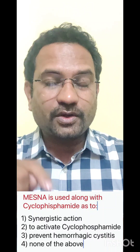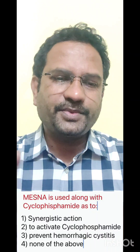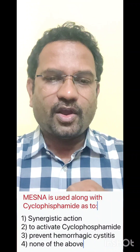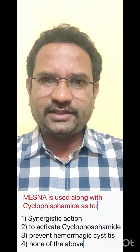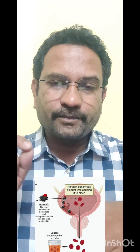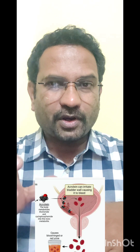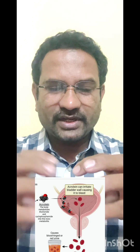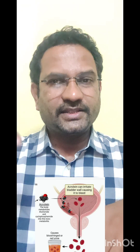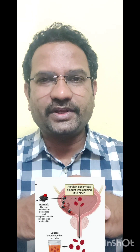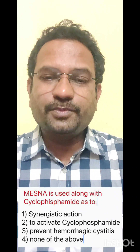Mesna (M-E-S-N-A) is used along with cyclophosphamide — what is the purpose? Options: synergistic action; to activate cyclophosphamide; to prevent hemorrhagic cystitis; none of the above. MESNA stands for mercaptoethylsulfonyl sodium — mercapto meaning an SH group. Look at the structure. Mesna is used with cyclophosphamide because cyclophosphamide is a prodrug that releases metabolites, one of which is the toxic metabolite acrolein. Acrolein specifically causes urinary tract problems called hemorrhagic cystitis — the urinary bladder gets inflamed and causes bleeding. Acrolein is neutralized when mesna is given, so both are administered together to neutralize the toxic metabolite and prevent hemorrhagic cystitis.